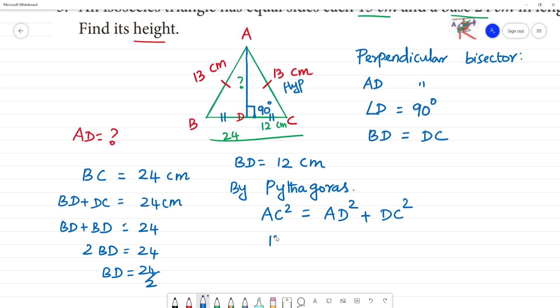AC square, 13 square equal to AD square plus DC square, 12 square. 13 square, 169 equal to AD square plus 144. 12 square will be 144.